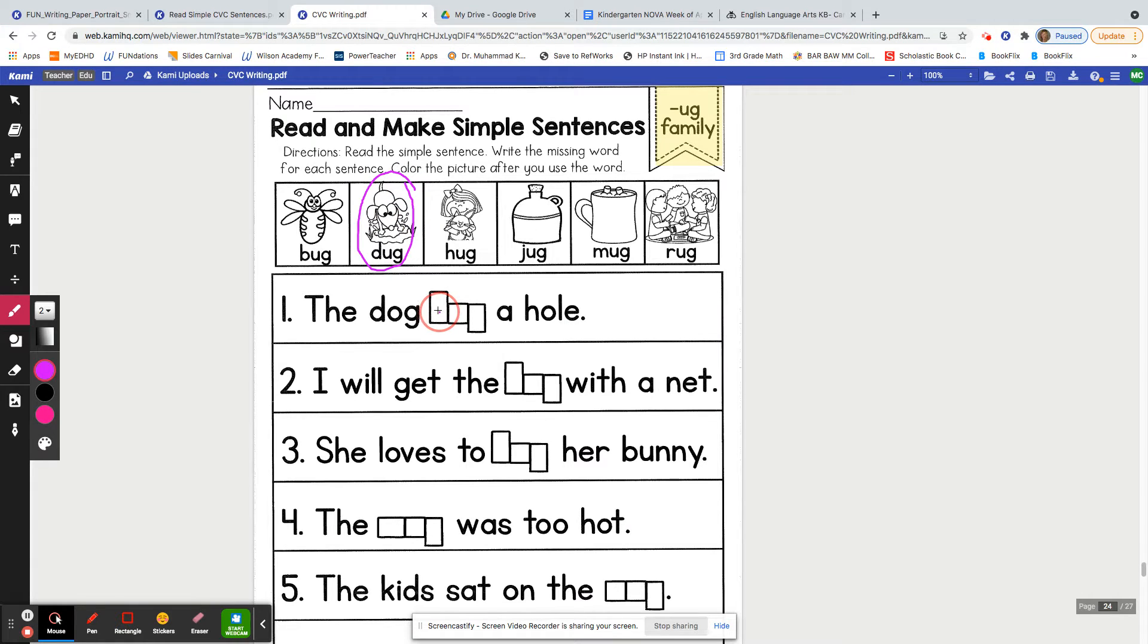Dug. Remember, we start on the plain line, fly backward, go up to the skyline and back down. Duh, uh, guh. D-U-G spells dug. The dog dug a hole.